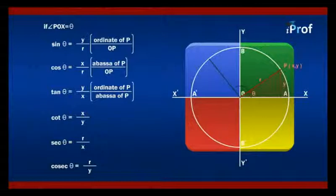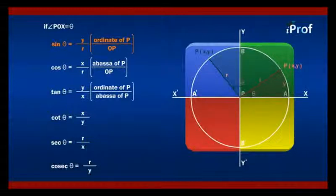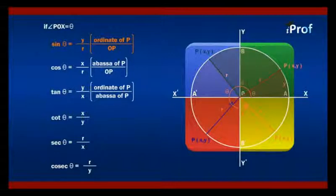If theta lies in the second quadrant, this is r, this is P x y, sin theta will be equal to y upon r. That is ordinate of P divided by OP, the radius of the circle.